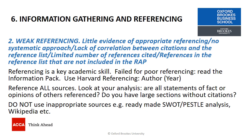The second broad reason is weak referencing. This could relate to little evidence of appropriate referencing or no systematic approach followed, a lack of correlation between citations and the reference list, limited numbers of references, or the reference list not being included in the RAP. Remember to submit your reference list, and remember that referencing is a key academic skill. At Oxford Brookes, we use the Harvard referencing system, which uses author-year, and there needs to be a strong correlation between the citations and the reference list.